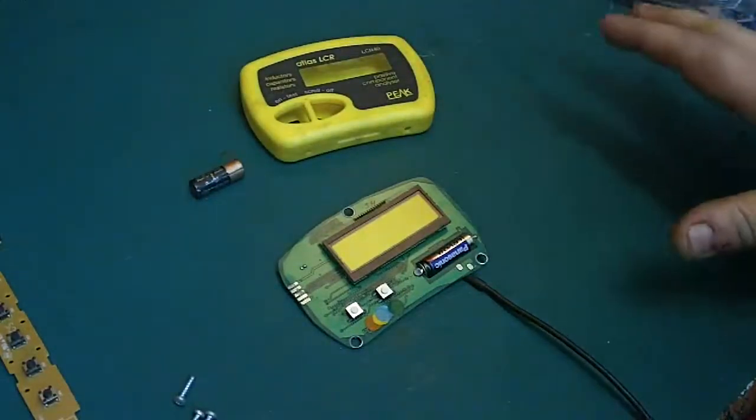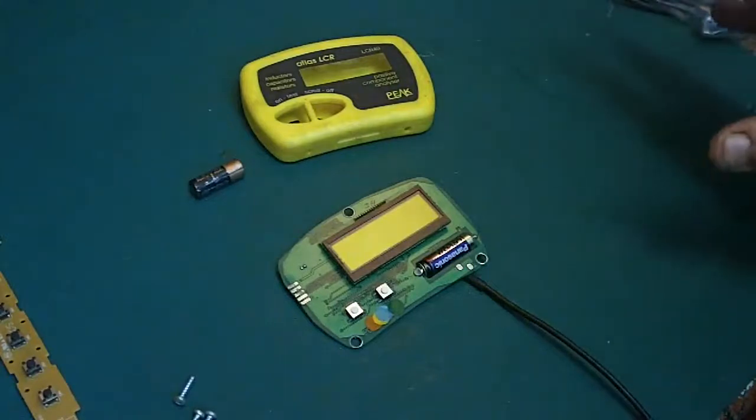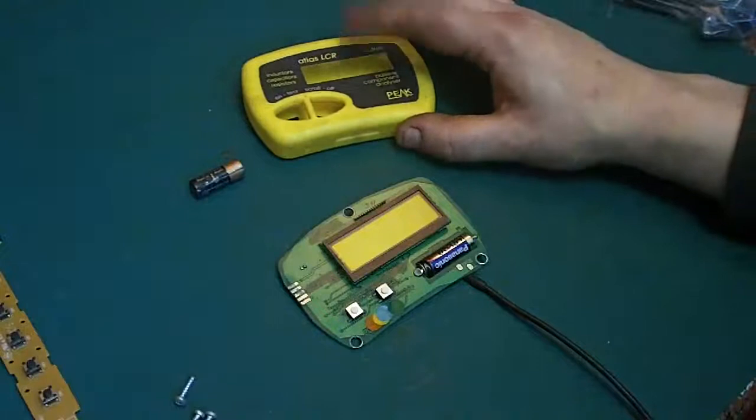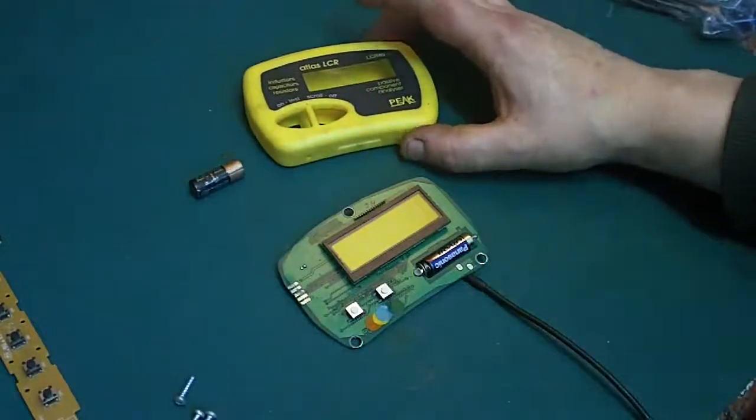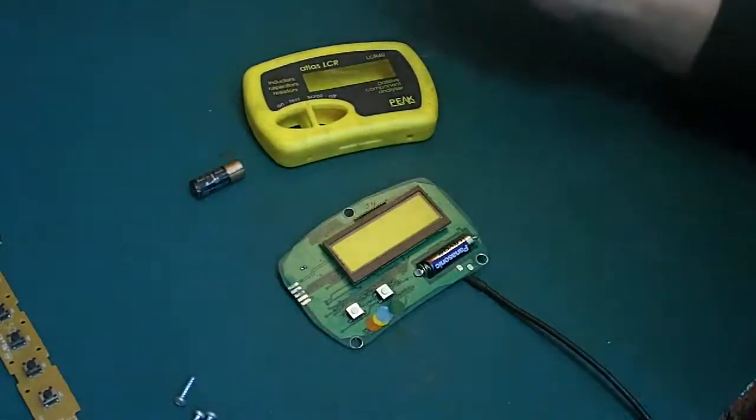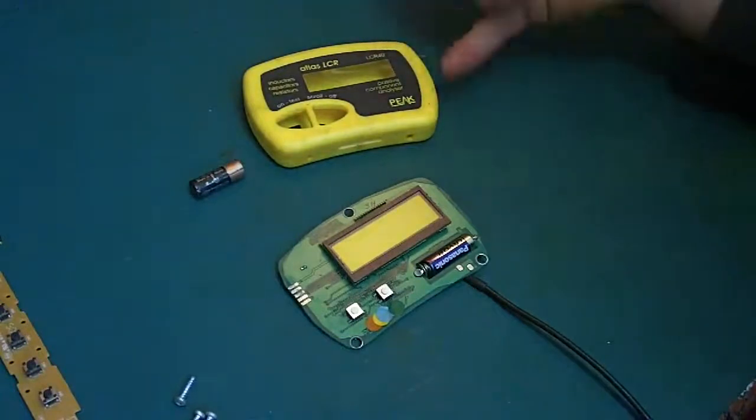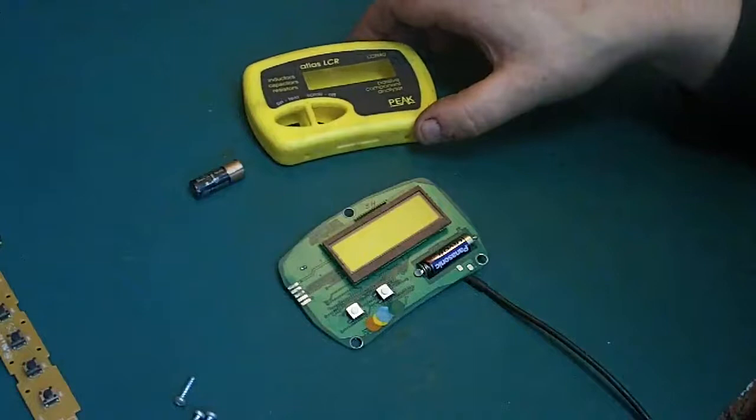Actually, the transistor testing version of this is a damn sight cheaper, it was about 79 pounds, but the LCR meter was very expensive. It is a top-rate piece of equipment, I will say that, and it's made locally to me. It's made actually in the High Peak, which is quite close to me.